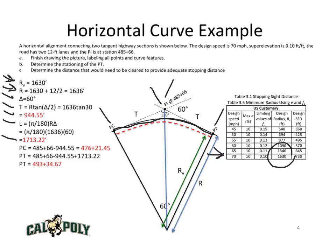We have the station of the PI, so in order to get the station of the PC, we just go backwards in this direction the tangent length. We subtract the tangent length 944.55 from the station of the PI, and we obtain the PC stationing, which is 476 plus 21.45.